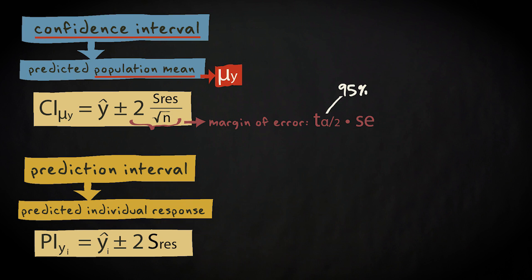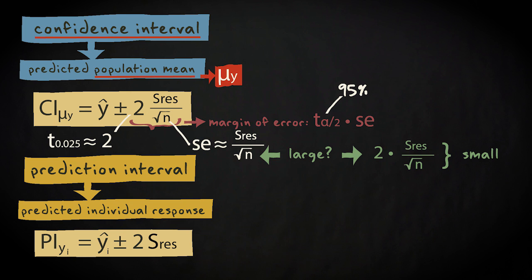We'll consider only a 95% confidence interval and approximate t with the value 2. We'll approximate the standard error with the residual standard deviation divided by the square root of n. If the sample size is large, then the margin of error will be relatively small, resulting in a narrow interval.